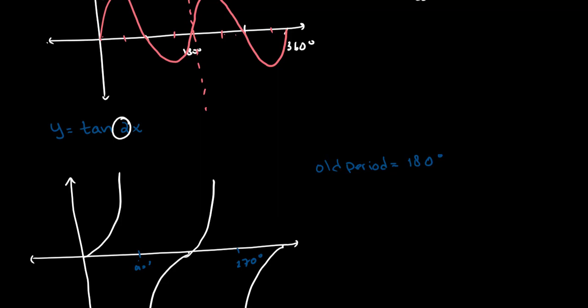so tan repeats itself by doing this loop over every 180 degrees. Now our new period will be, it's our old period over b, so 180 degrees over 2, which is equal to 90 degrees.